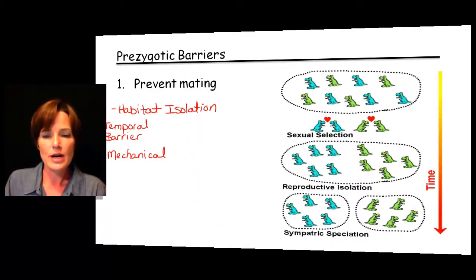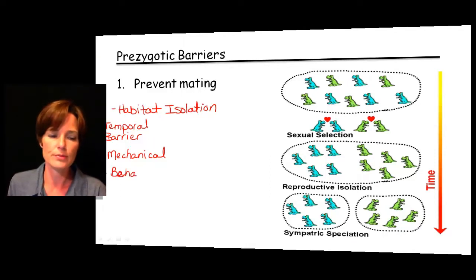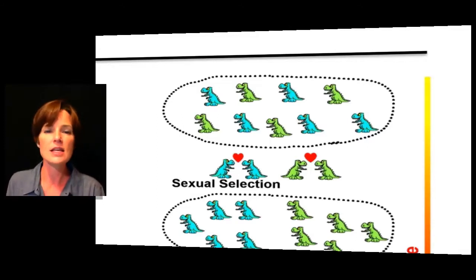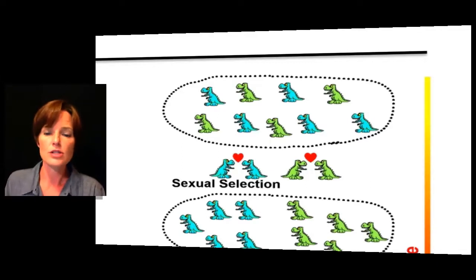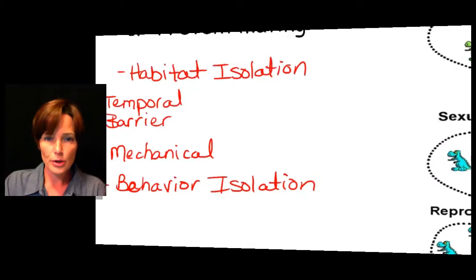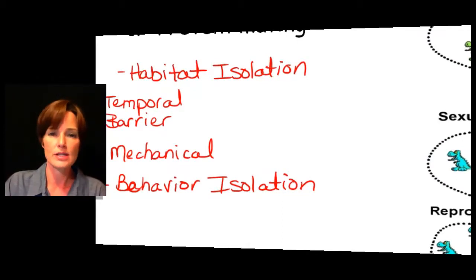The last example of a prezygotic barrier is a difference in behavior — specifically, mate preference. In this picture we've got little dinosaurs, and maybe the blue ones decided they only want to mate with blue ones, and the green ones only want to mate with green ones. Even though they're living in close proximity to each other, they're just not interested in the other individuals at all. They're looking for someone similar to them as their choice for mating. Notice that in every one of these examples, the individual organisms are not mating for some specific reason — so if they don't mate at all, we don't have to worry about formation of the zygote.